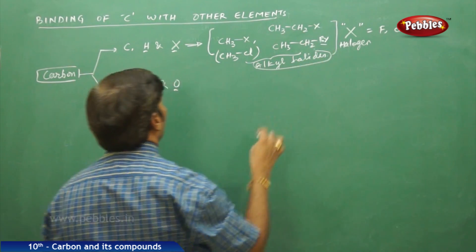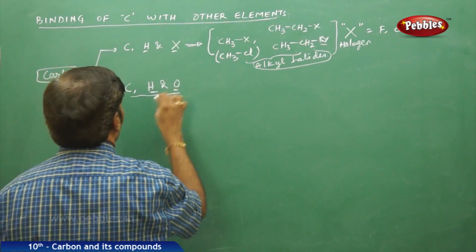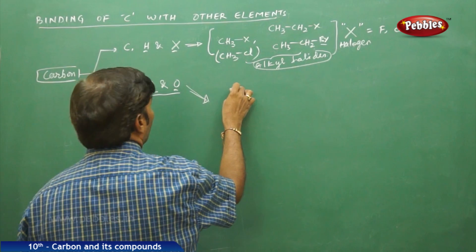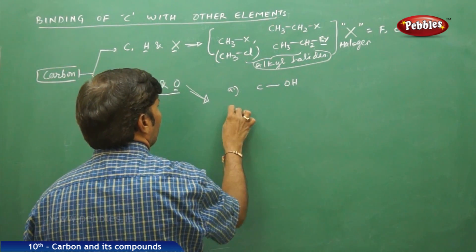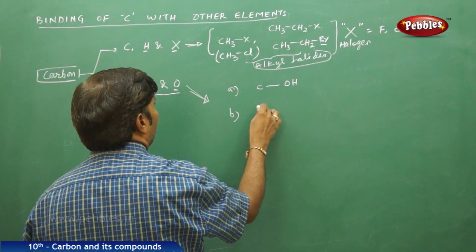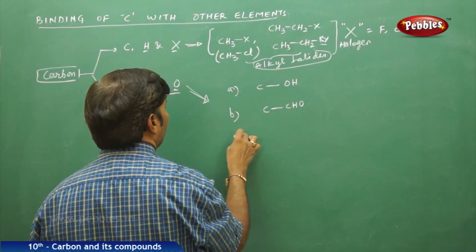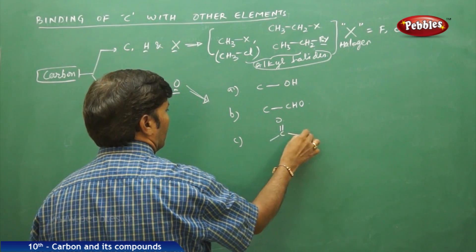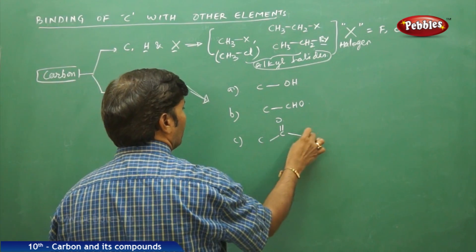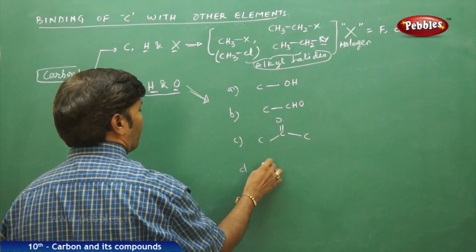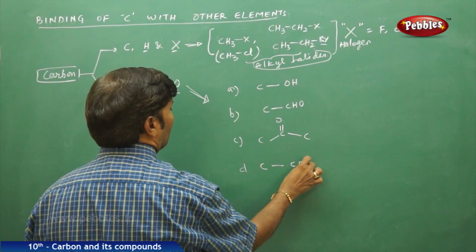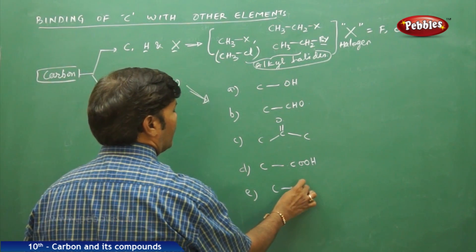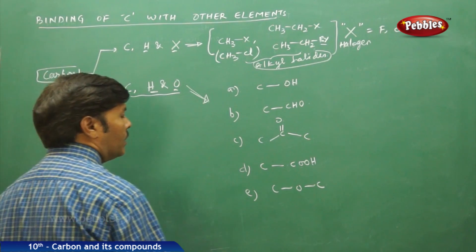Likewise, if you take carbon, hydrogen, and oxygen, we can take different combinations. The first combination is carbon with OH — that gives an alcohol. The second is a carbon with an aldehyde group. Third is a ketone — the carbonyl group carbon. Then you can take COOH, which is a carboxylic acid. Then carbon–oxygen–carbon, where hydrogen is not present.